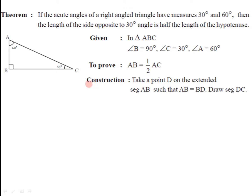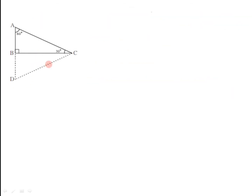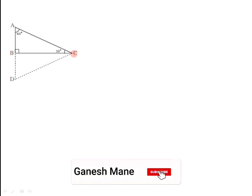To prove this we have to do one construction. We have to take point D on the extended segment AB such that AB is congruent with BD, and we have to draw segment DC. So after doing this construction we get a triangle, and we join segment CD.